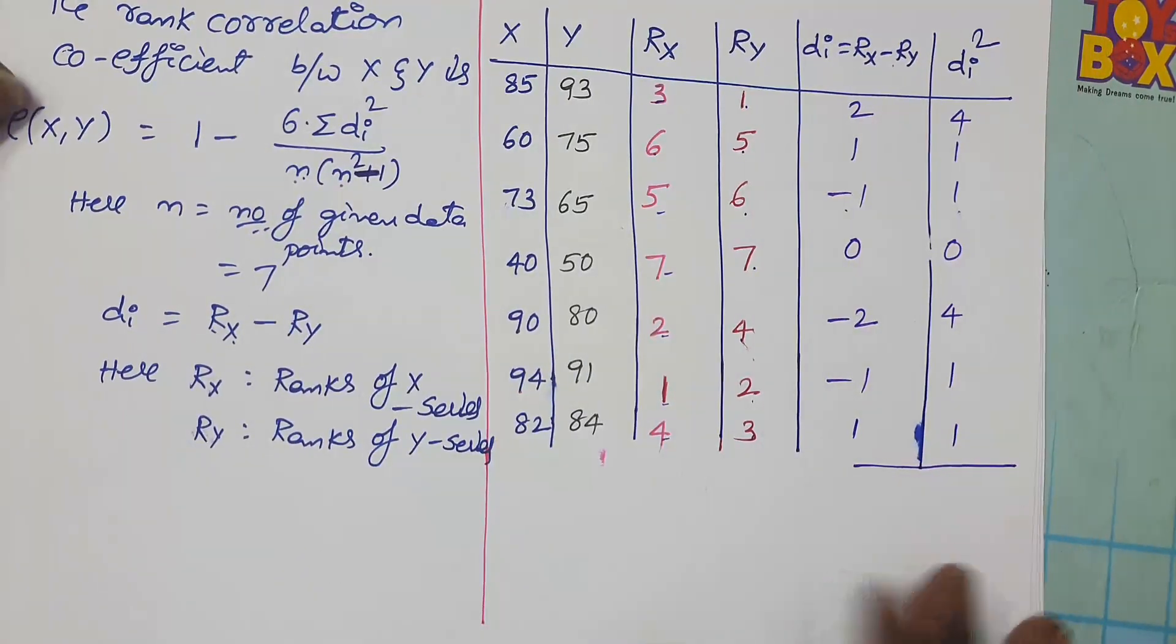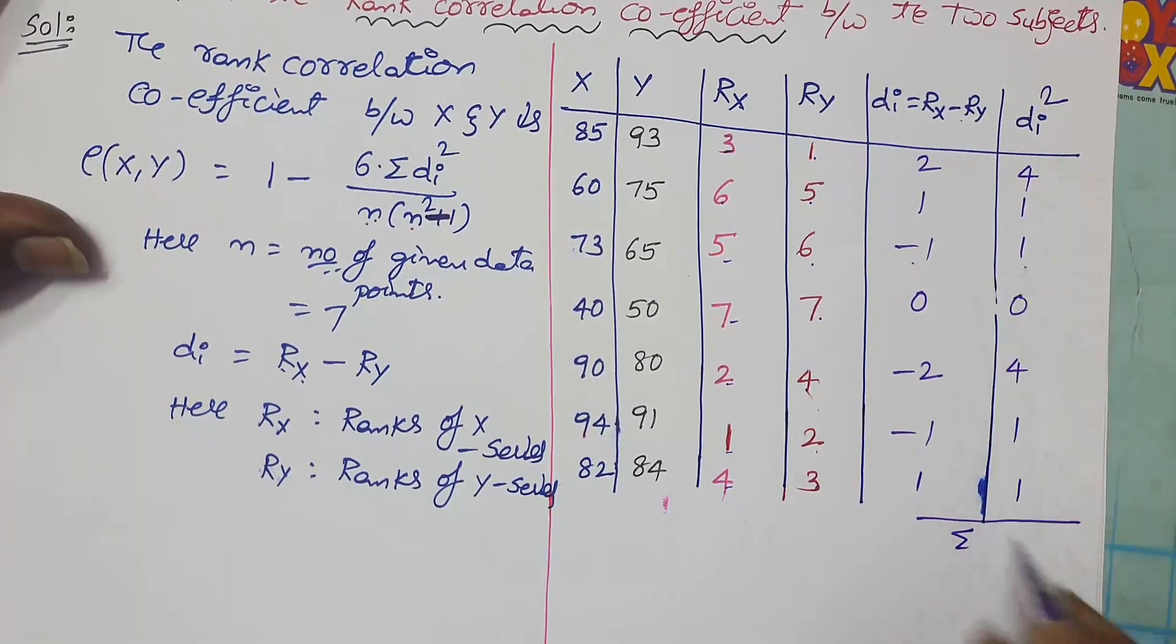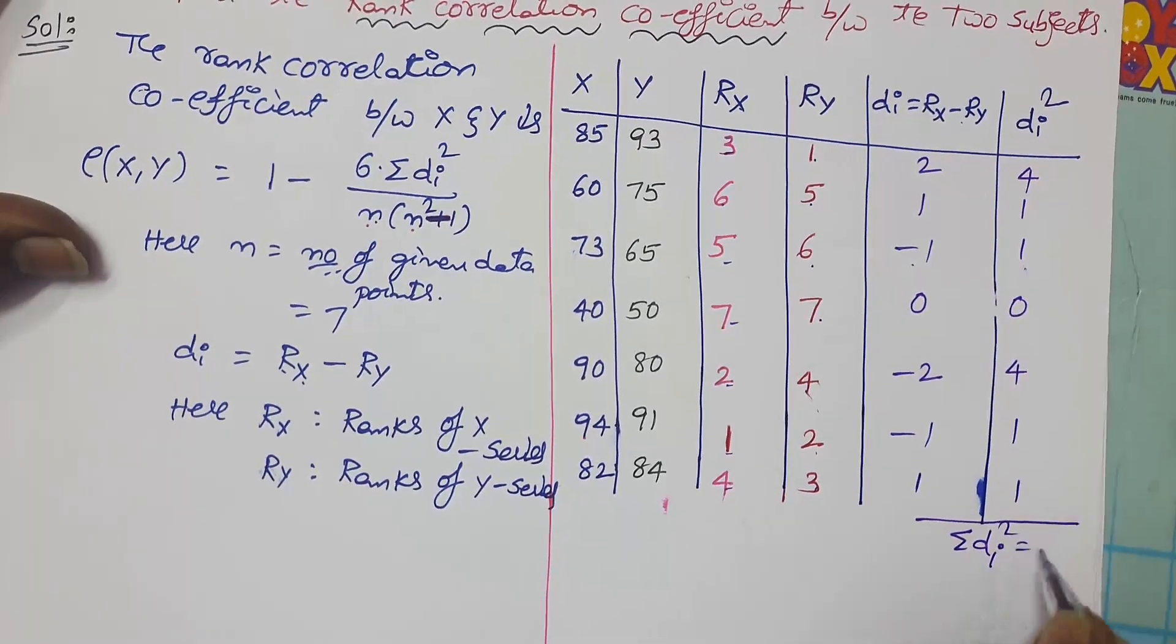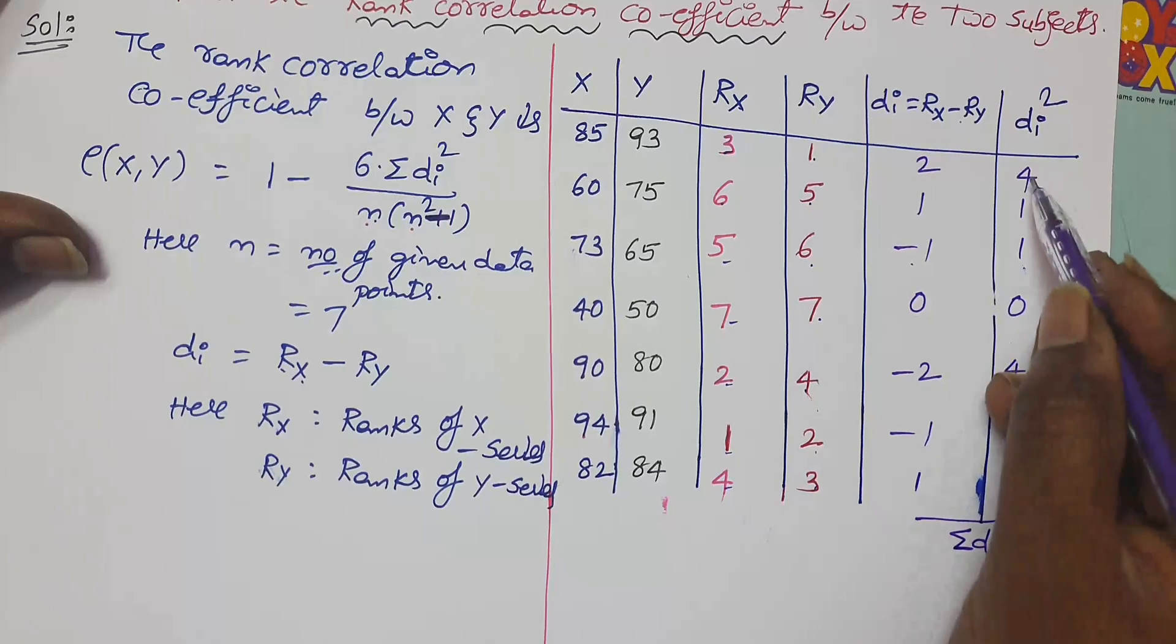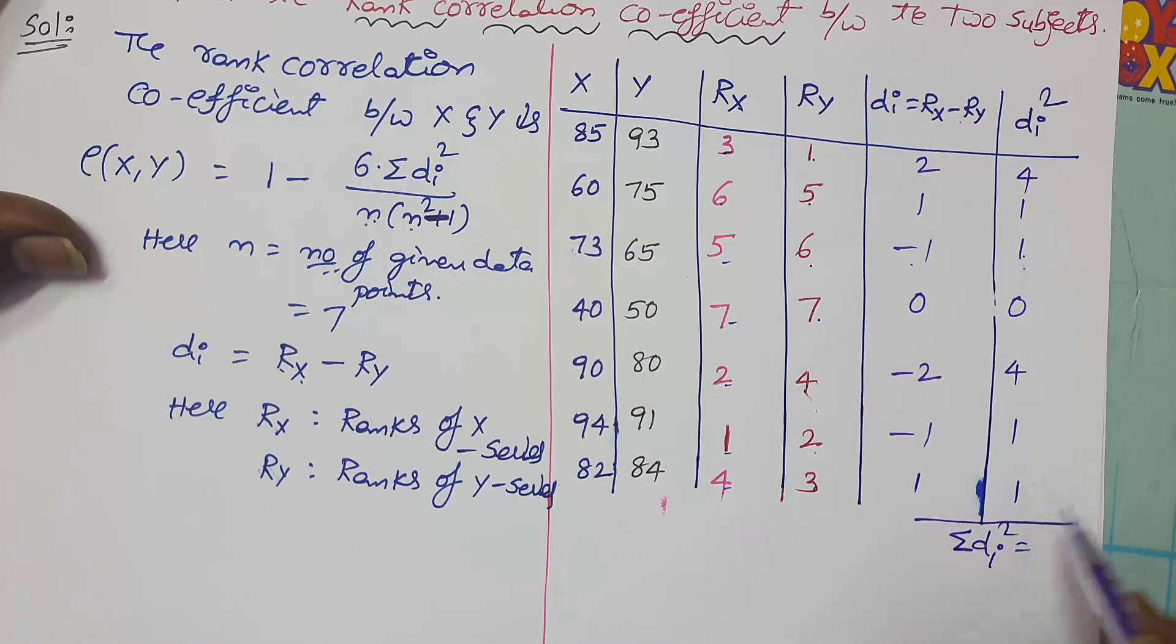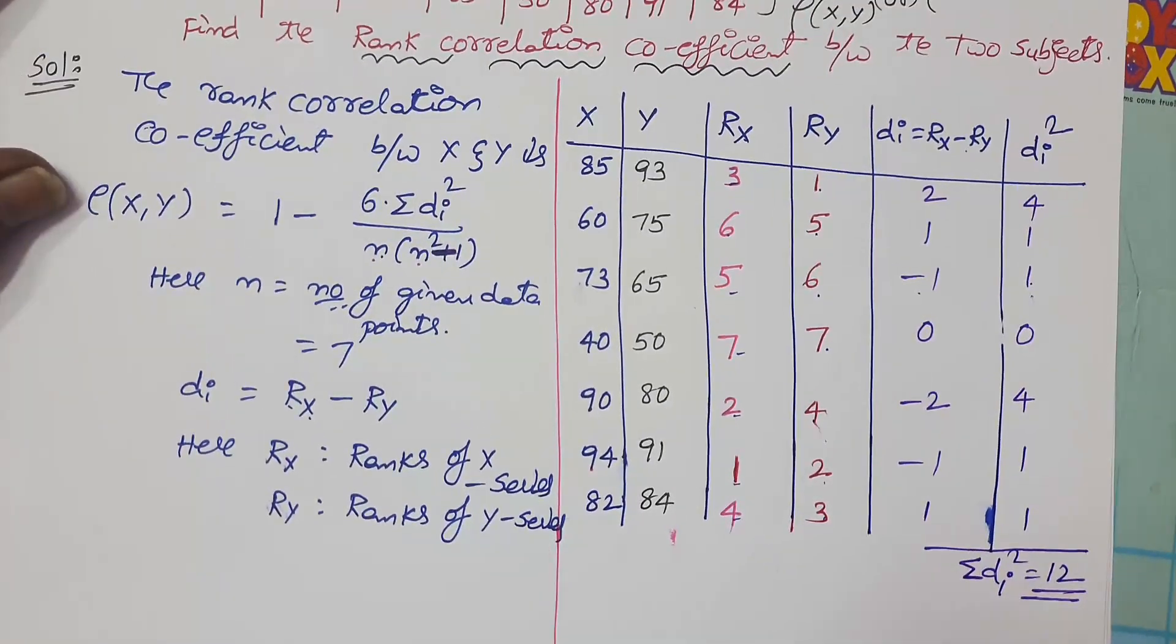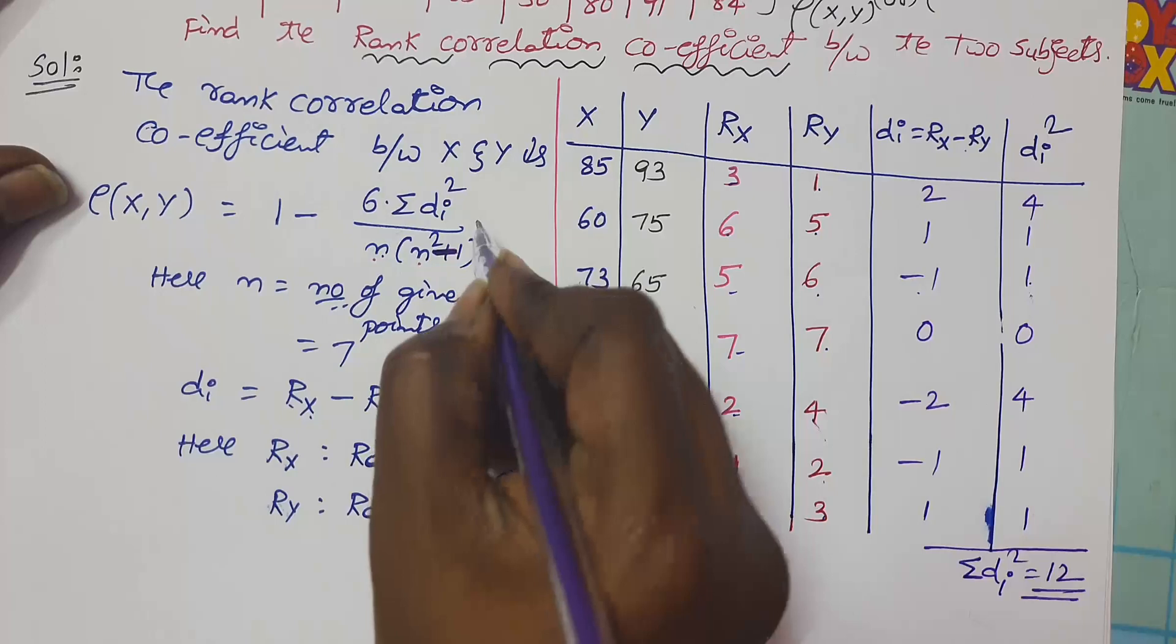Now find out summation of all values of di square, so you will get sum of di square. 4 plus 1, 5; 6; 6 plus 4. Now replace this sum of di square in this formula.